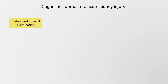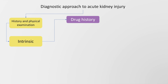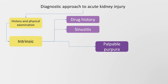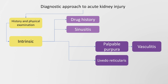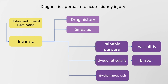History and physical examination in intrinsic AKI would generally indicate use of drugs or recurrent sinusitis suggesting a vasculitis. On examination, there may be palpable purpura suggesting vasculitis, livedo reticularis suggesting emboli, and erythematous rash which may be present in acute interstitial nephritis.